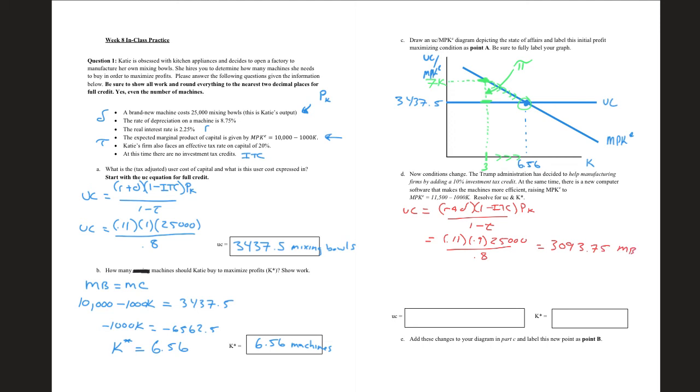I'm just going to do MB this time to save some space. So we got 3093.75 mixing bowls. And we do the same thing. Marginal benefit equals marginal cost. So 11,500 minus 1,000K equals 3093.75. Again, do the algebra out where we get minus 1,000K equals minus 8406.25. Divide both sides by negative 1,000, and we will get that equal to 8.41. So this will be 8.41 machines.